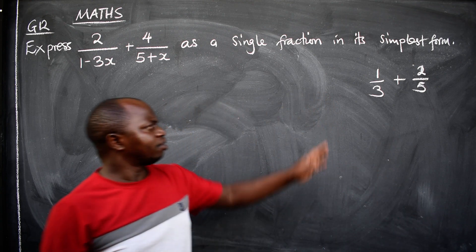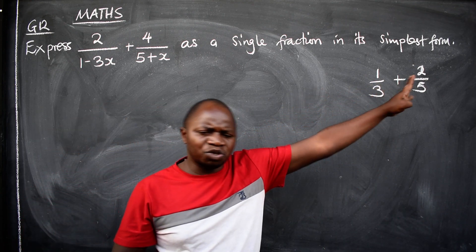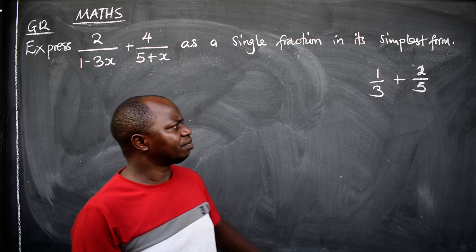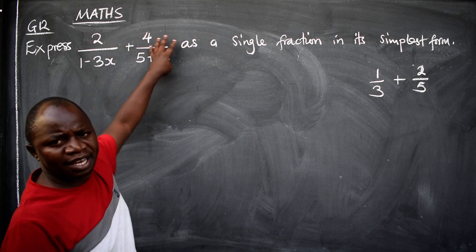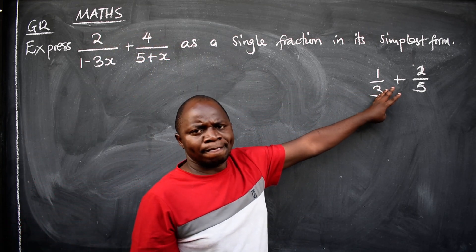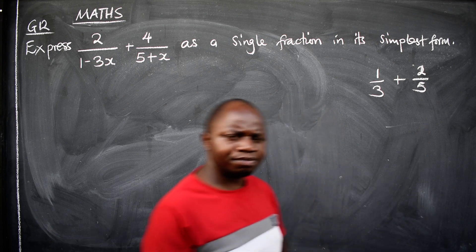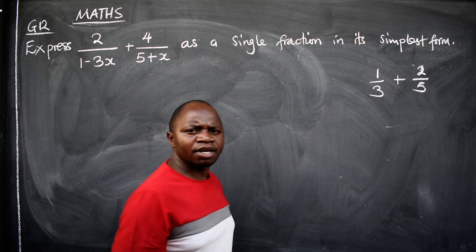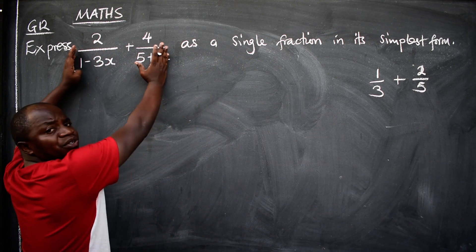When I say add those two fractions, how do you go about it? It's the same way you apply here, the same concept here. You look for the lowest common multiple and all that. That is exactly what we are going to do here.